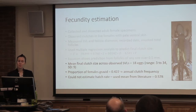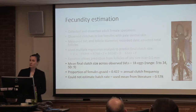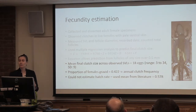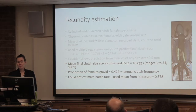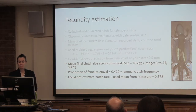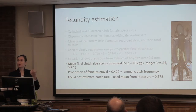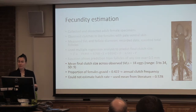We also found that the proportion of females that were gravid out of our samples was 0.422, so we called this our annual clutch frequency. We were not able to estimate hatch rate because we never observed any nests — nobody's ever seen them for the species we study. So we used the mean rate from the literature, which is somewhat questionable given how unreliable those studies are, but that's all we really had.